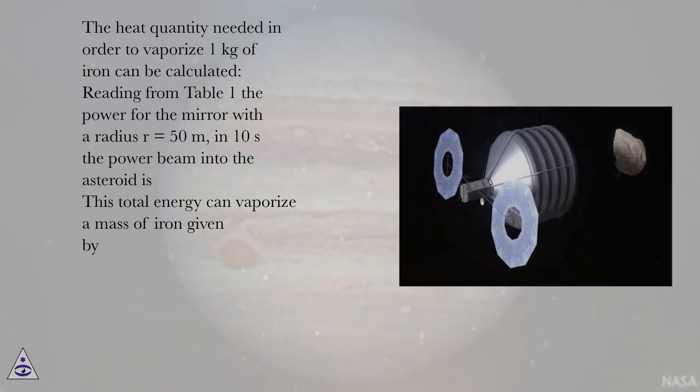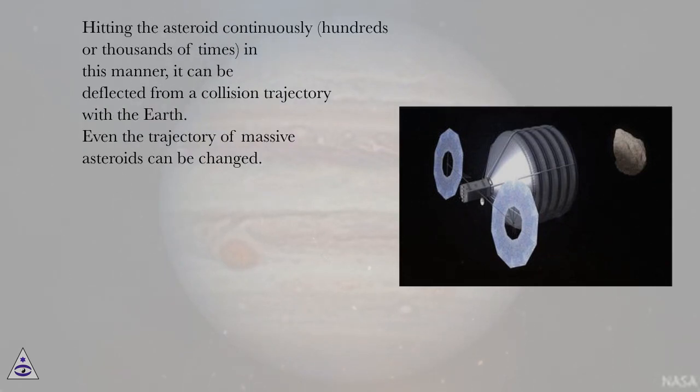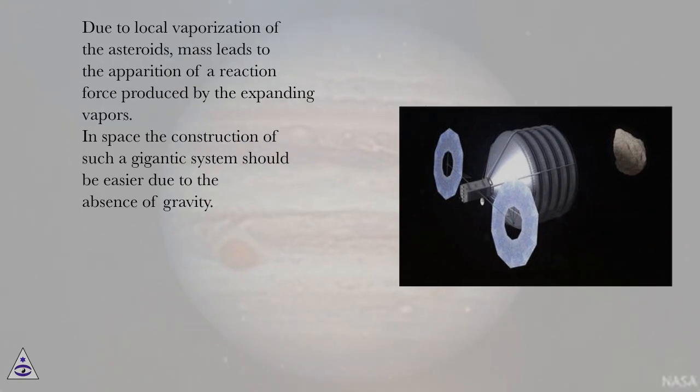This total energy can vaporize a mass of iron given by hitting the asteroid continuously, hundreds or thousands of times. In this manner, it can be deflected from a collision trajectory with the Earth. Even the trajectory of massive asteroids can be changed. Due to local vaporization of the asteroid's mass, this leads to the apparition of a reaction force produced by the expanding vapors.